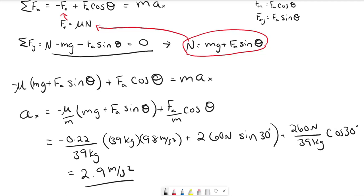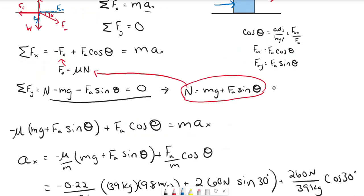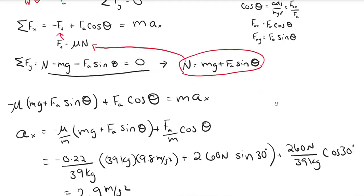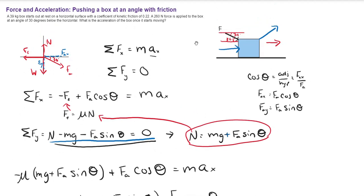That's how you find the acceleration when we have a problem like this. It's more straightforward when the pushing force is only along the horizontal axis — then your normal force is just mg. Alternatively, if you have a pulling force angled upward instead of a pushing force downward, you also need to account for the change in normal force. In that case, instead of normal force having a plus FA·sine(theta), it would be negative, because the pulling force acts opposite to mg. But here they're both in the same direction and both opposite the normal force.